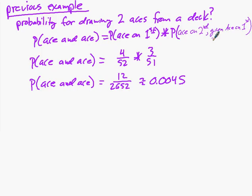In that previous video I started to do the second one — given no ace on the first — and that was actually important. What we've done is found the probability for one of several potential outcomes. There's the probability for getting two aces, but what's the probability for getting one ace from two draws? Or what's the probability of getting no aces from two draws? There are a lot more combinations possible here.